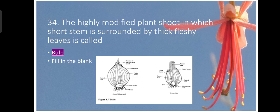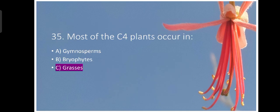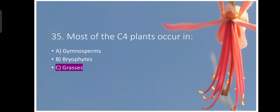Thirty-four question. The highly modified plant shoot in which short stem is surrounded by thick fleshy leaves is called bulb. That question was asked to fill in the blanks. It doesn't contain any option. Question number thirty-fifth and last. Most of the C4 plants occur in very easy question. Grasses. Grasses are mostly C4 plants. Other options are not related.